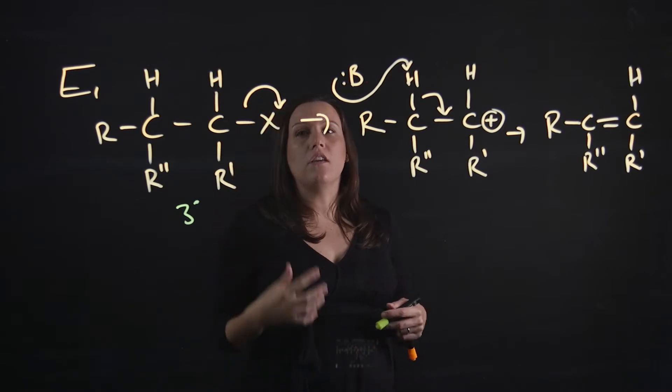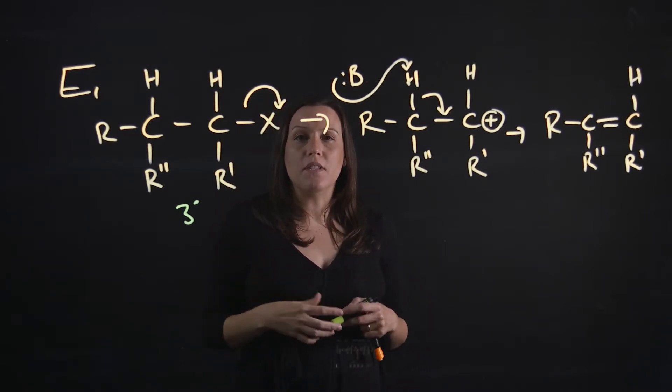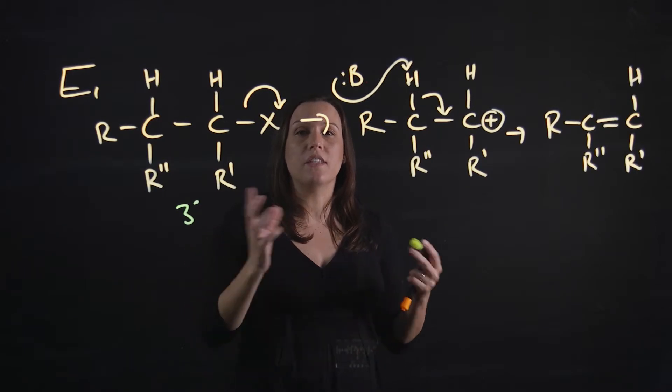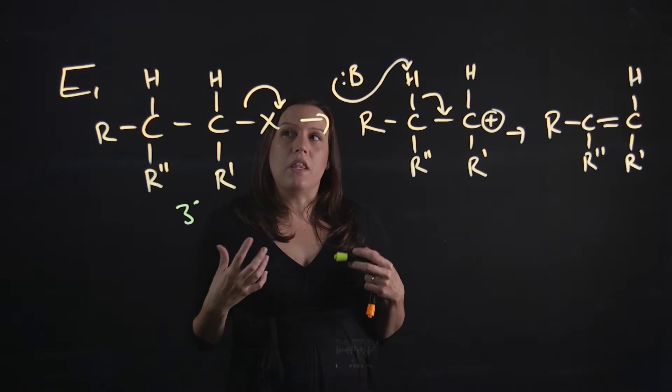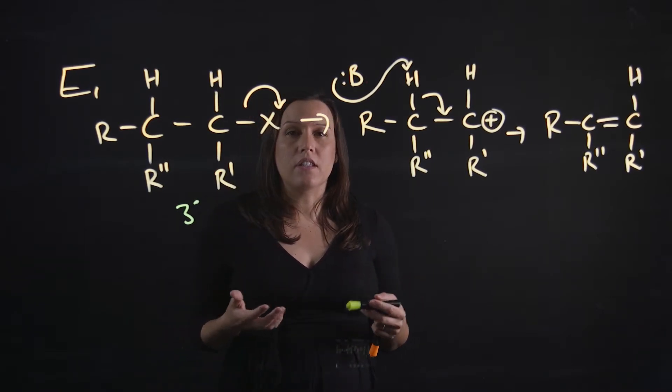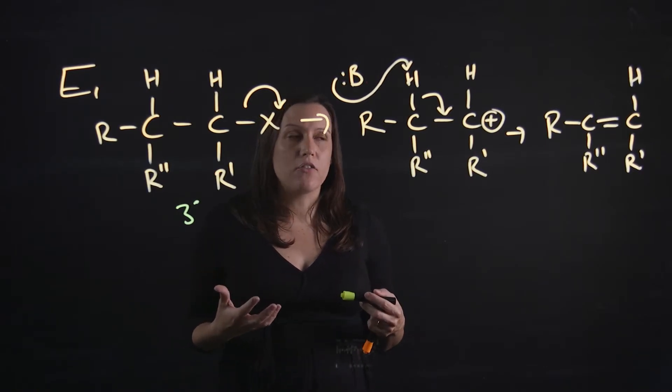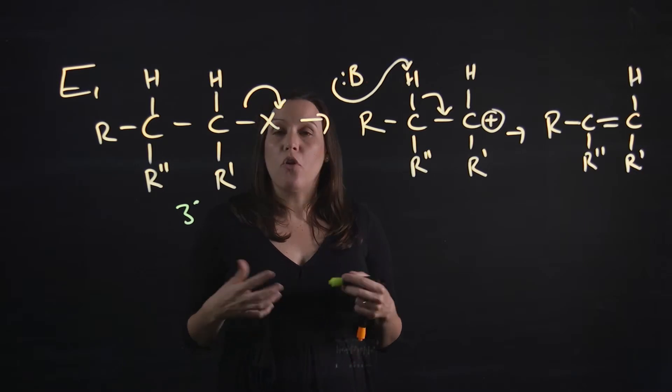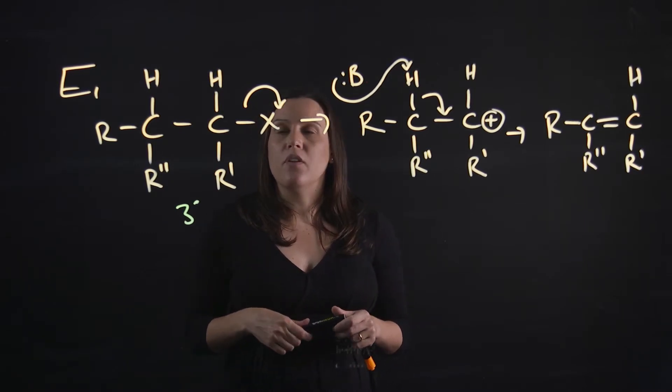It usually occurs at the same time as the SN1 reaction, so you'll have some SN1 product and some E1 product being formed. But the E1, from what I can tell, is favored if it's a very harsh condition. So you've got heat added to the reaction and you've got protic solvents. Heat and protic solvents favor E1.